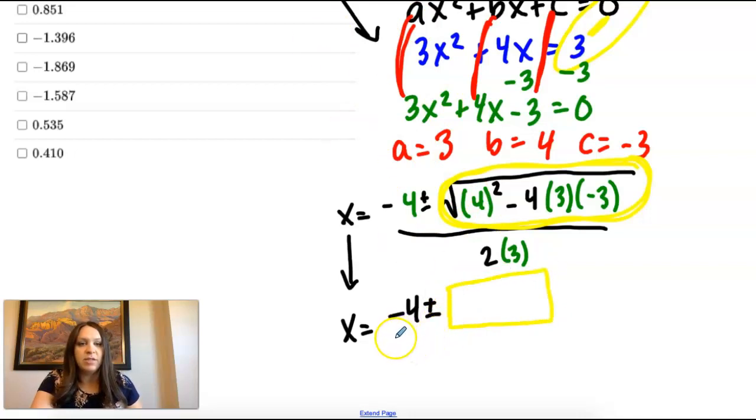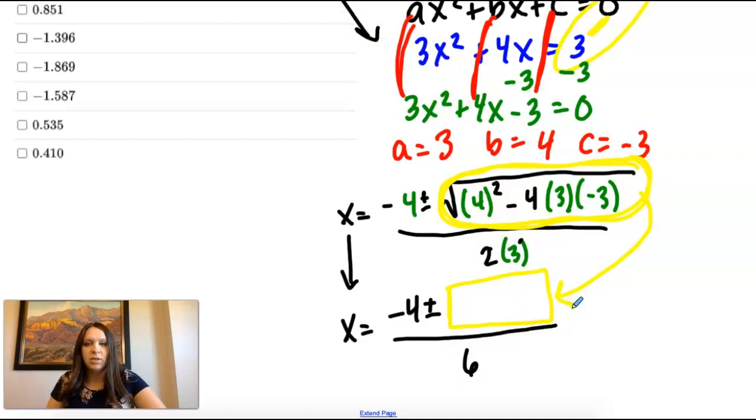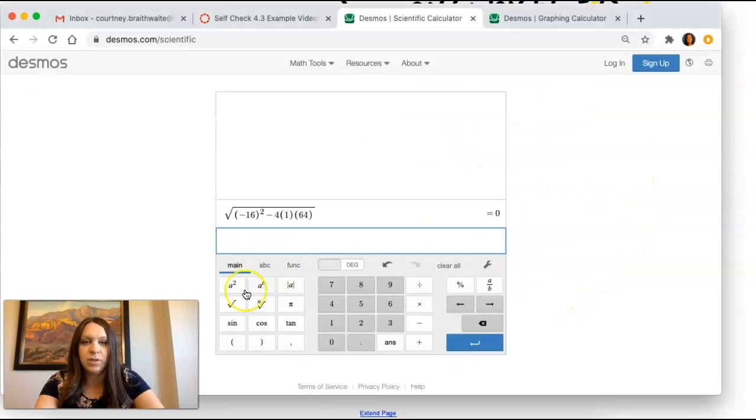And then it's going to be divided by 2 times 3, which is 6. So I'm simplifying the square root. And I'm just going to put that in my calculator, just like I did last time. Square root of 4 squared.